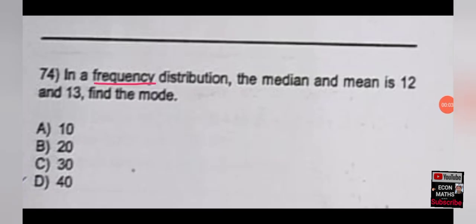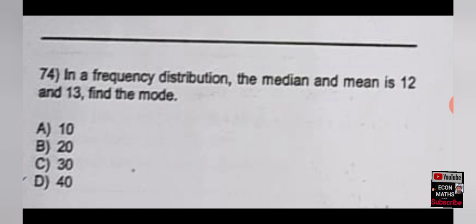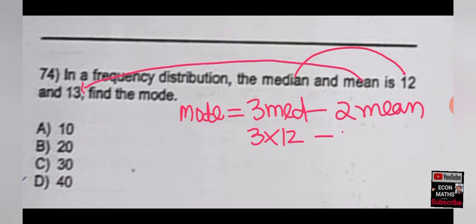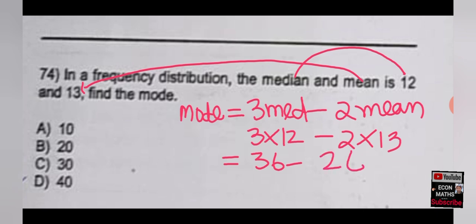The next question: in a frequency distribution, the median is 12 and the mean is 13 — find the mode. The formula is: Mode = 3 × Median − 2 × Mean. So Mode = 3 × 12 − 2 × 13 = 36 − 26 = 10. The correct option is option B, which is 10.